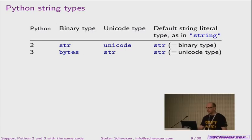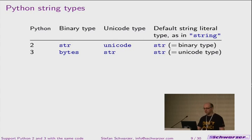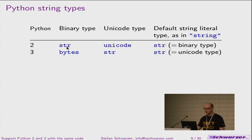Something that might be confusing while working on this adoption for Python 3 is that both Python 2 and 3 call their default string types 'str'. If you write a string literal in Python 2, it's the byte string type. In Python 3, it's actually the Unicode type, the text type. The byte string type is named 'bytes' in Python 3, and 'unicode' is the Unicode type in Python 2.